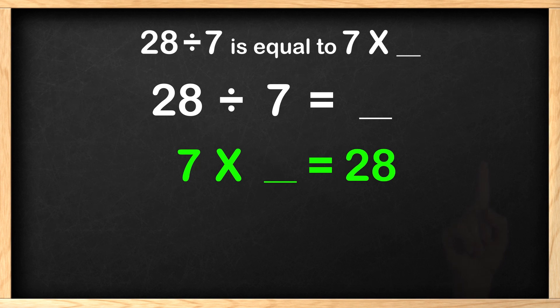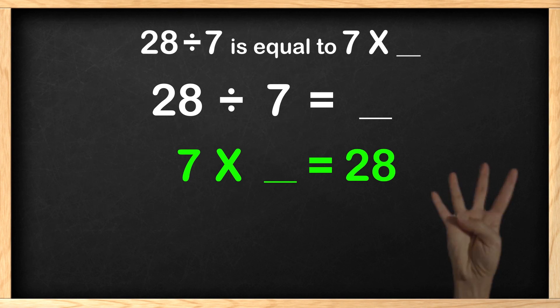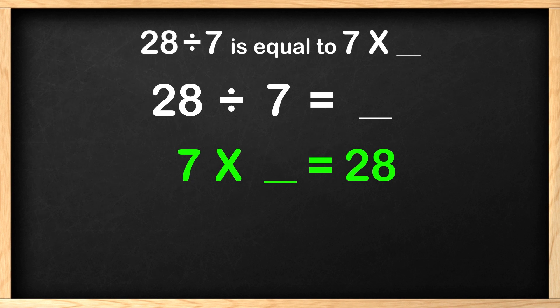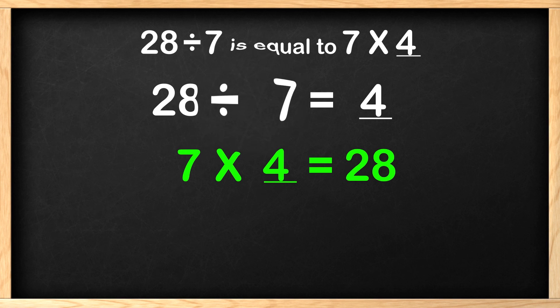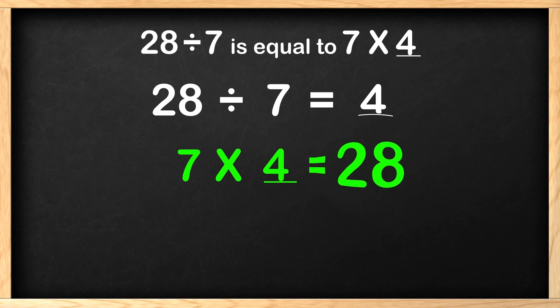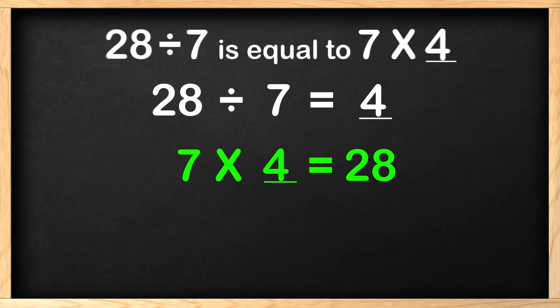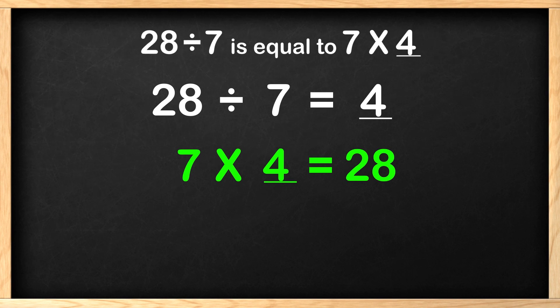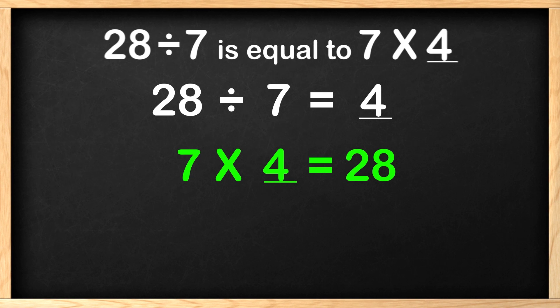We count 7, 14, 21, 28. How many fingers are you holding up? The answer is 4. 28 divided by 7 is 4. And 7 multiplied by 4 is 28. Great job! So the answer to the question at the top is 28 divided by 7 is equal to 7 times 4.